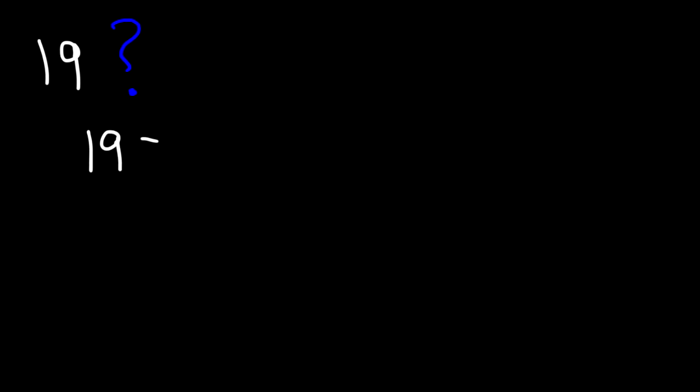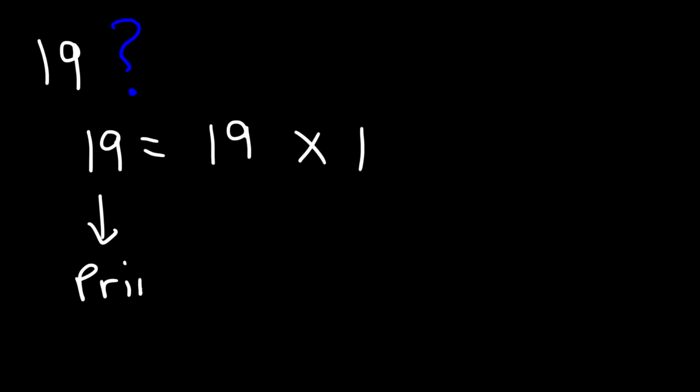Now what about 19? Is it prime or composite? What two numbers multiply to 19? 2 does not go into 19 — it's not even. And 3 does not go into it either. The only way we can express 19 is using 19 and 1. So therefore, 19 is a prime number.